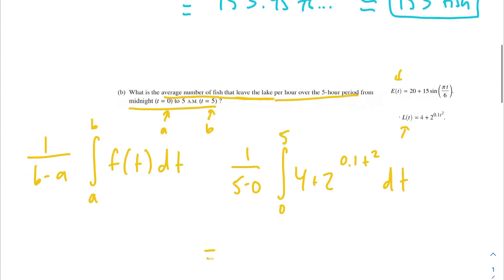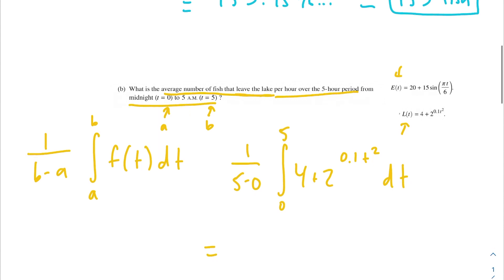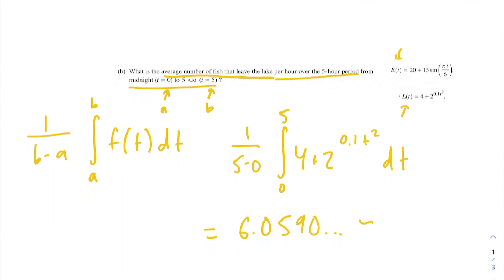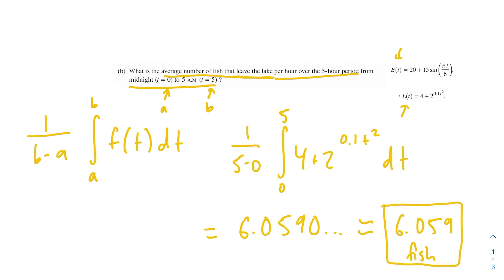Once again, this is a calculator problem, so we plug that into our calculator and we get 6.0590. We round that to three decimal places and get 6.059 fish as our final answer for part b.